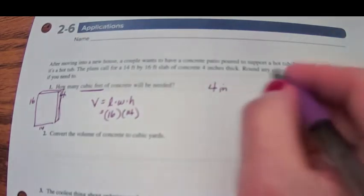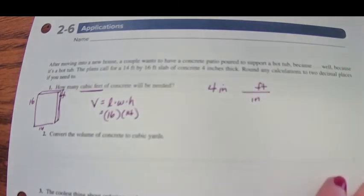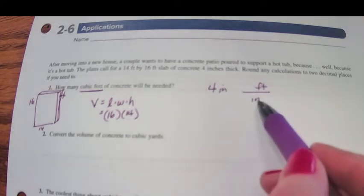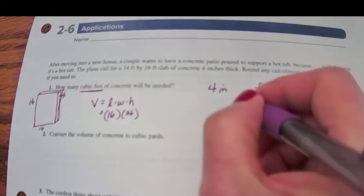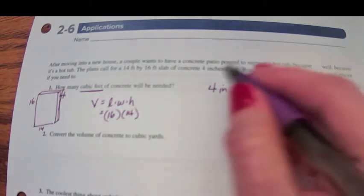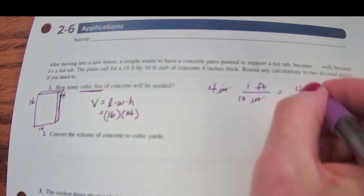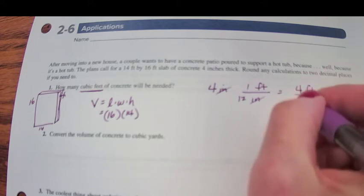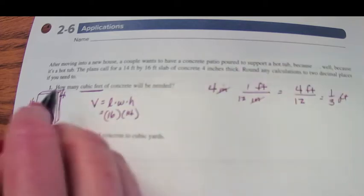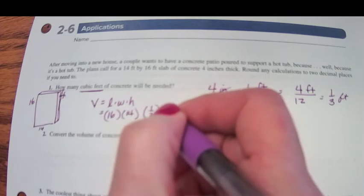4 inches - we don't want inches, we want feet. Remember how we did this, we multiply by 1. We need a fraction that if inches are in the numerator here, we want inches in the denominator here. And there are 12 inches in 1 foot. Now our inches cancel and we multiply across. That's going to be 4 feet over 12. 4 over 12 is the same as 1 third foot. So this dimension, rather than saying 4 inches, we're going to say it's 1 third of a foot.